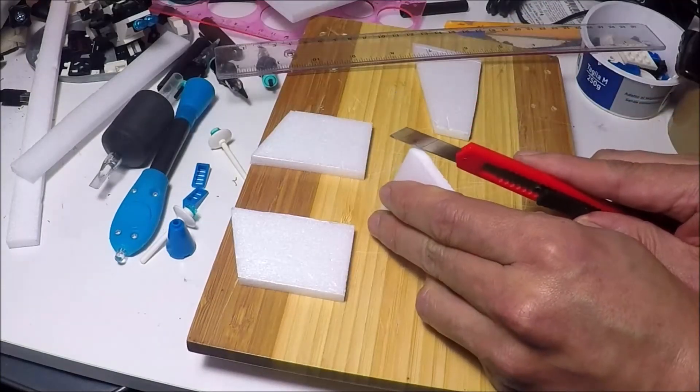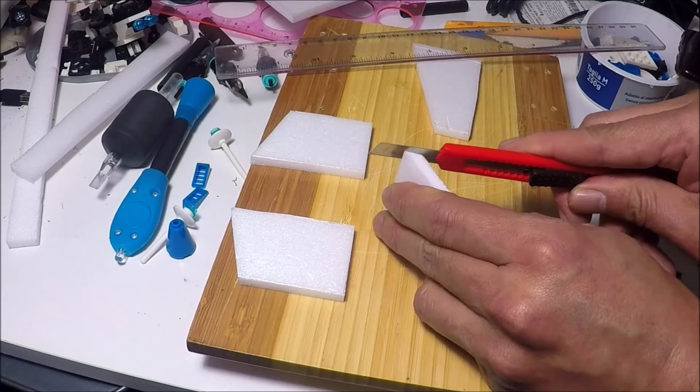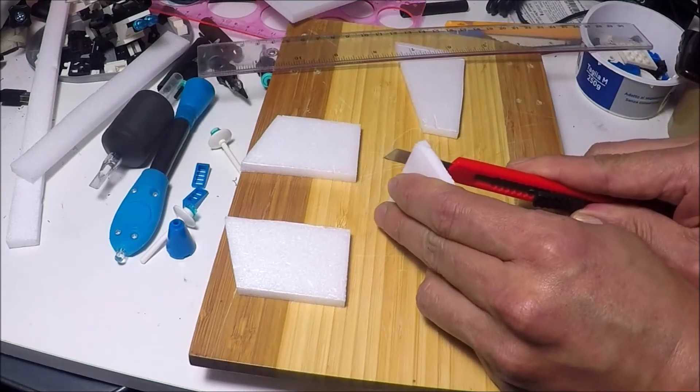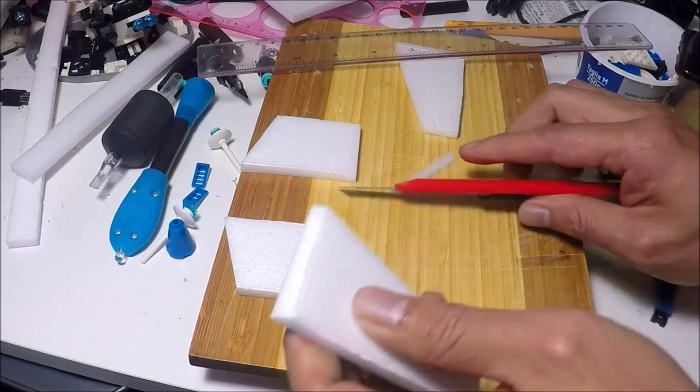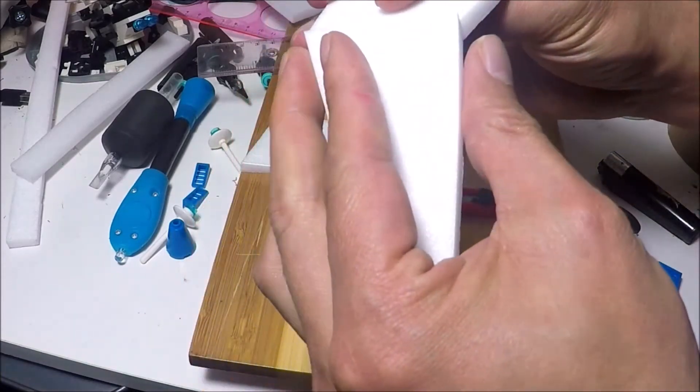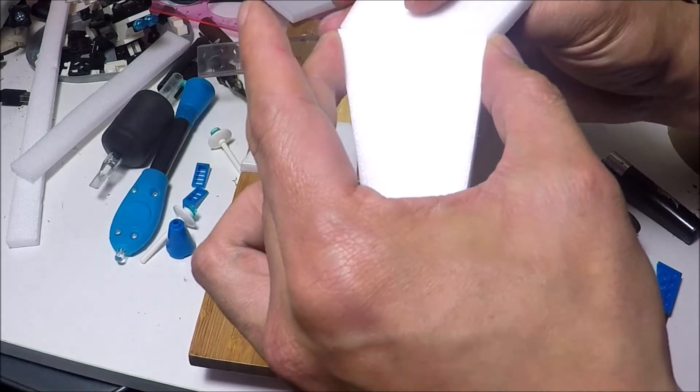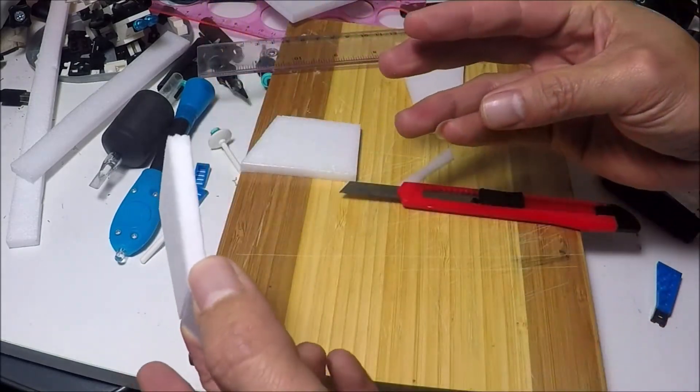Unfortunately, I need to cut an angle. So, I did a 45 degree angle. I just measured the thickness of the styrofoam. Did a measurement on the exact same thickness and cut those two lines to make the angle.